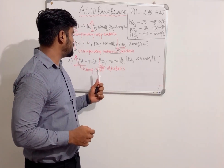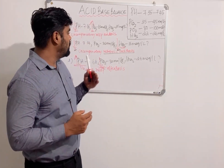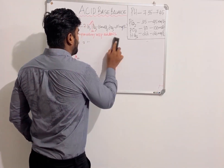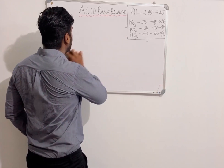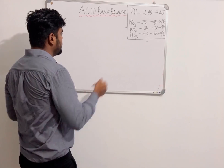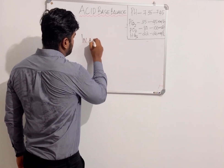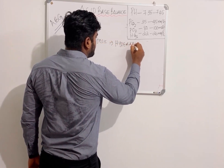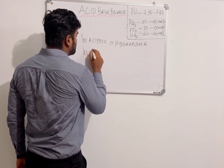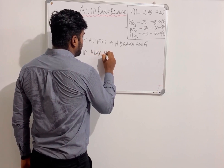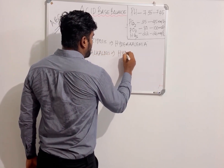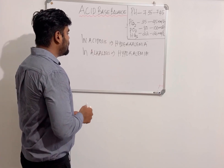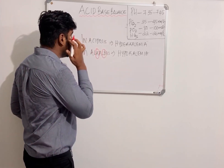One important point related to acidosis and alkalosis: in acidosis, there is a chance for hyperkalemia — increased potassium in the body. In alkalosis, there is hypokalemia — potassium will be very low. To remember this: alkalosis means K is low (in chemistry, K means potassium).